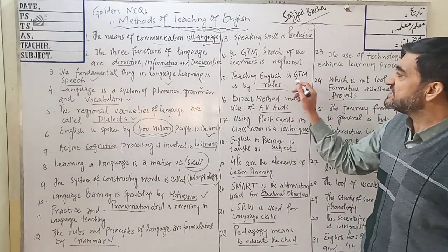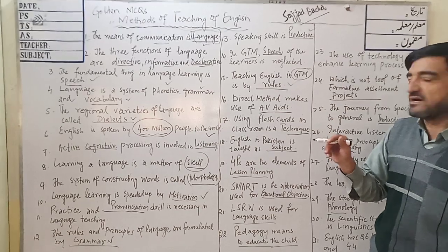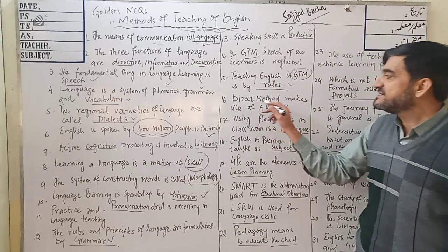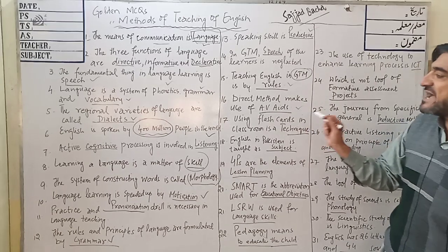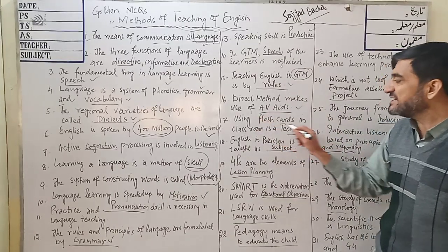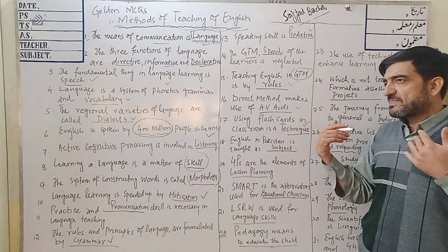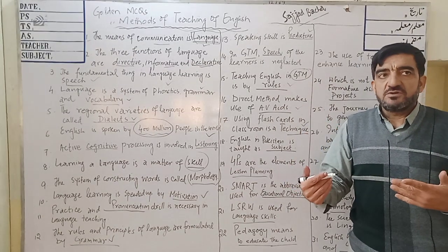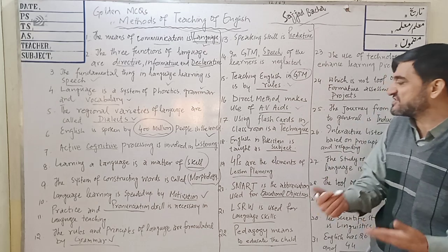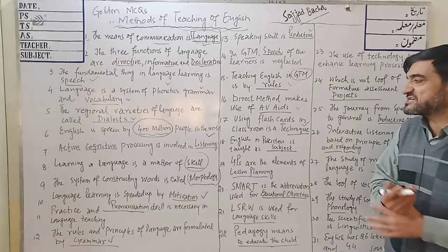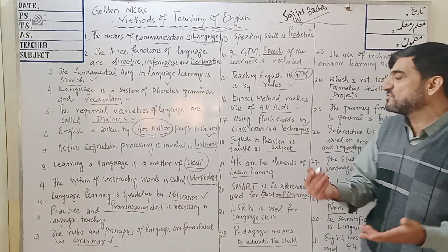MCQ 15: Teaching English in GTM is by rules. The Grammar Translation Method is also known as the rules-based method. MCQ 16: The direct method makes use of aids. This is a good method because aids are used. MCQ 17: Using flashcards in the classroom is a technique. When the teacher knows the correct way to display flashcards, it becomes effective. A flashcard should be displayed for a maximum of seven to ten seconds.